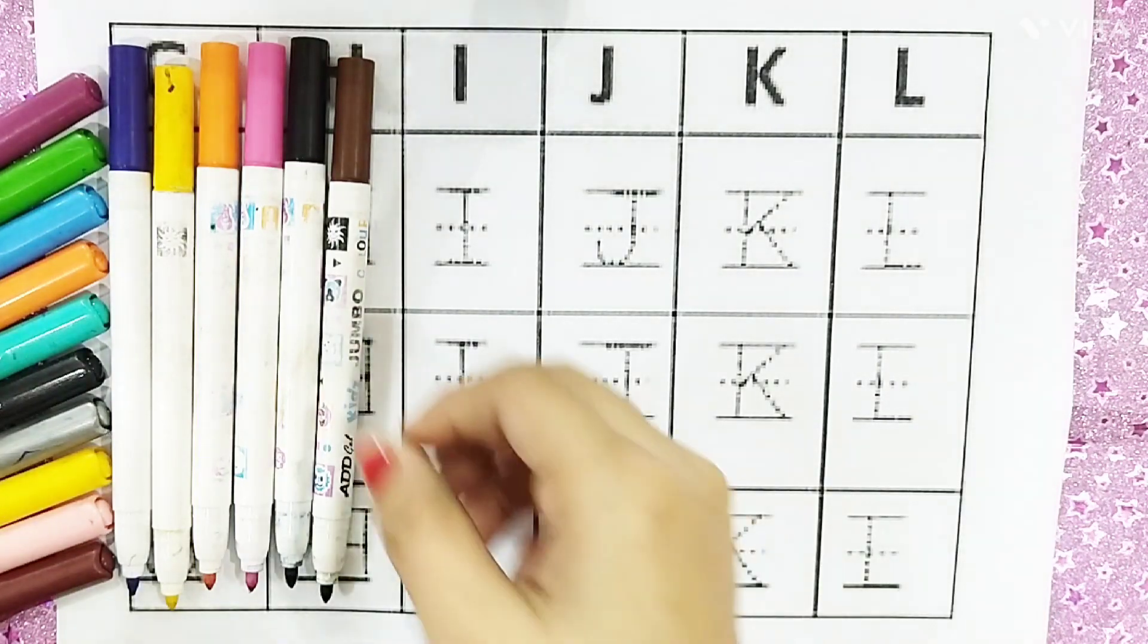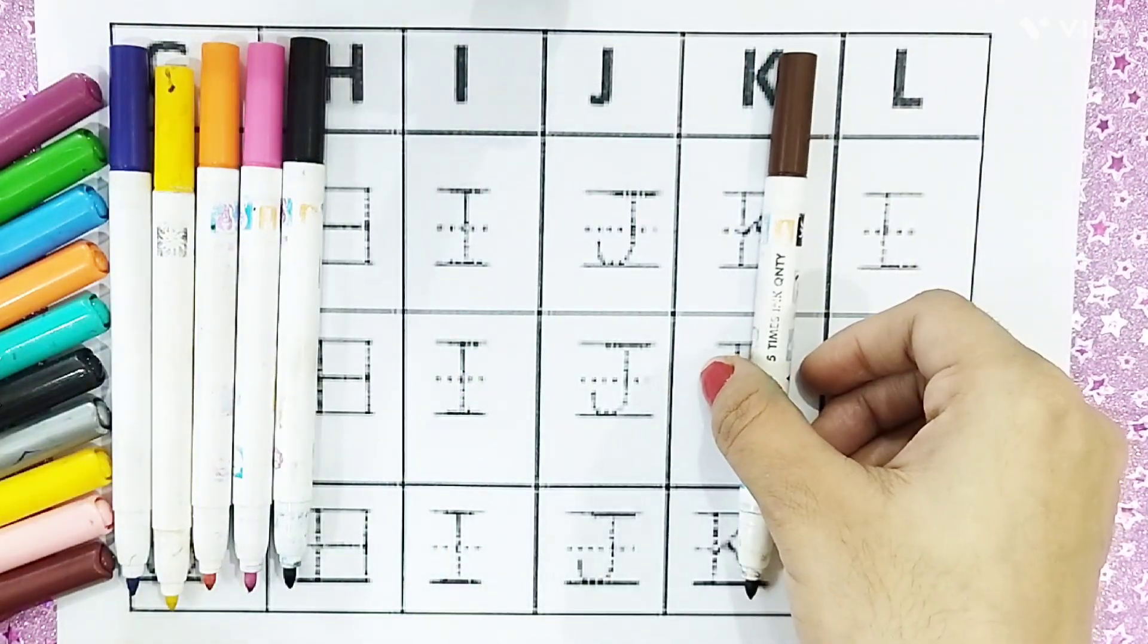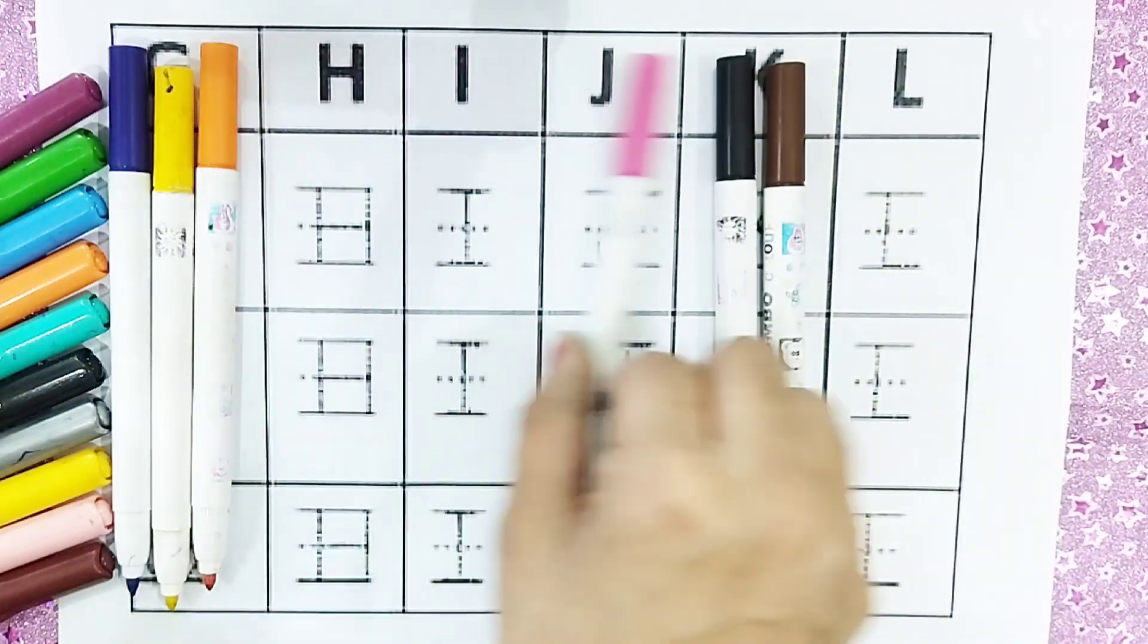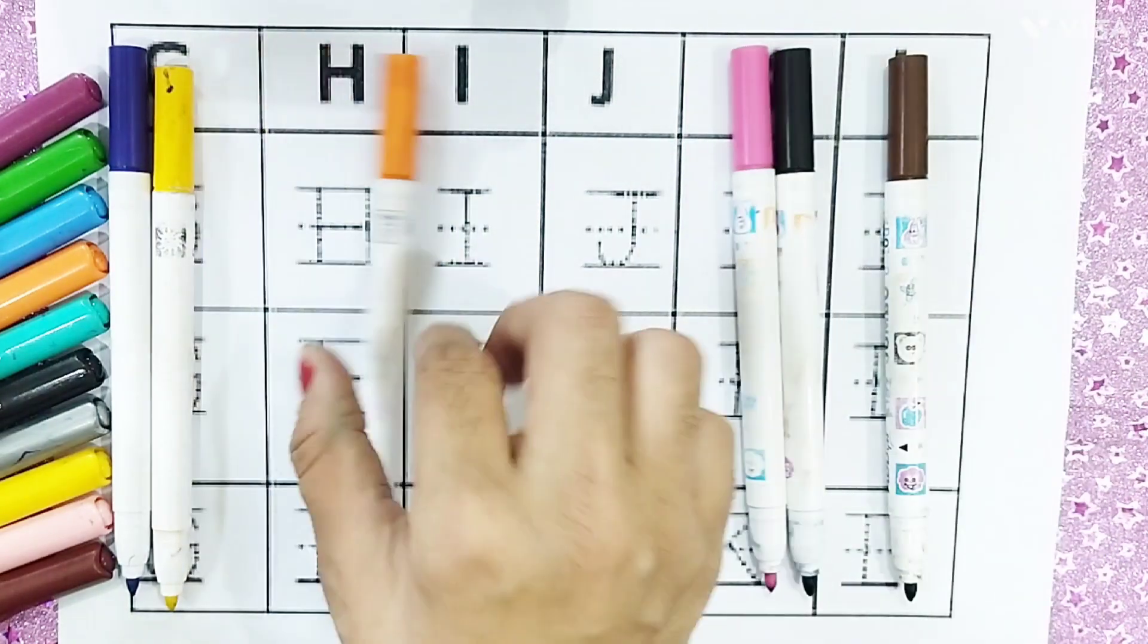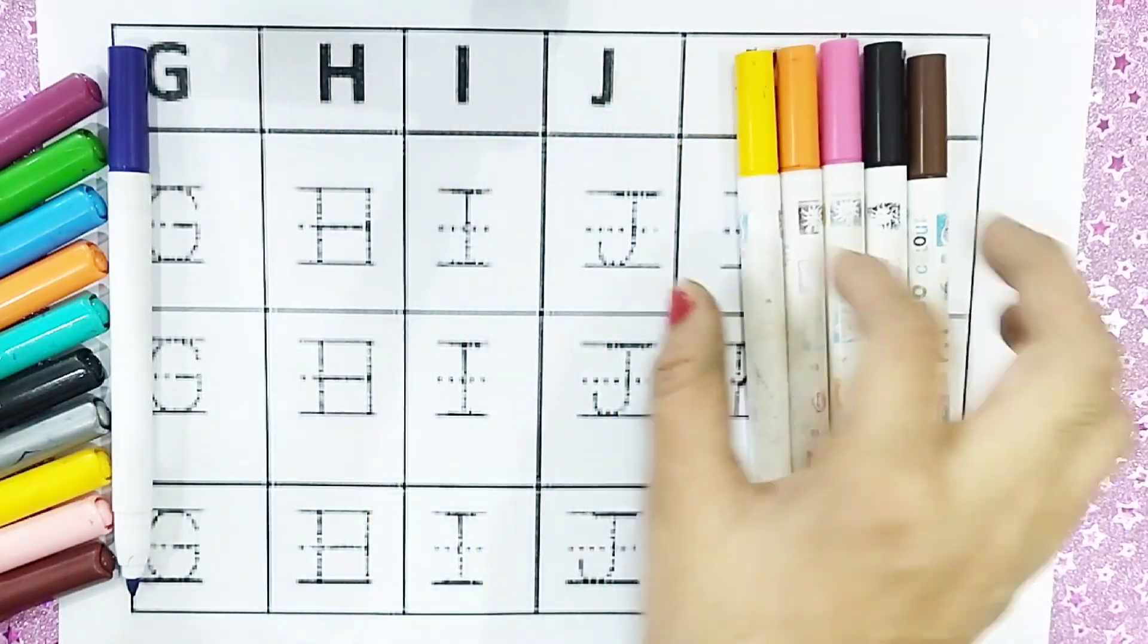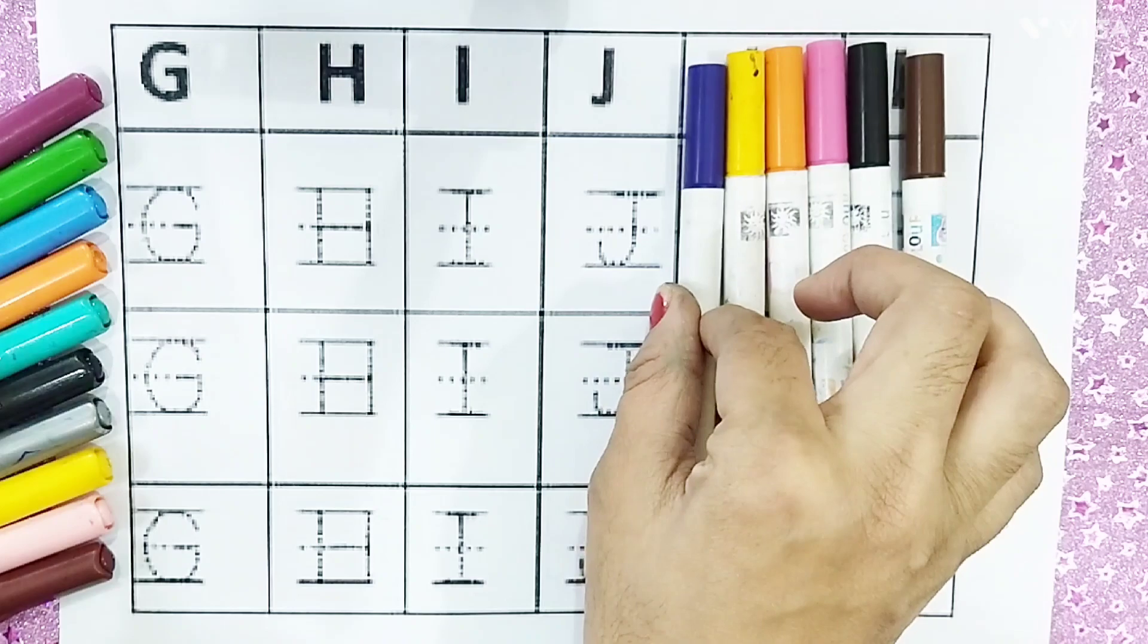Colors names: brown color, black color, pink color, orange color, yellow color, purple color.